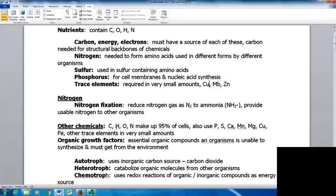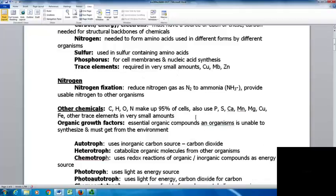Other chemicals - carbon, oxygen, hydrogen, and nitrogen make up 95% of cells. You'll also have phosphorus, sulfur, calcium, manganese, magnesium, copper, iron, and other trace elements. Organic growth factors are essential organic compounds that an organism is unable to synthesize, so they must get these from the environment.